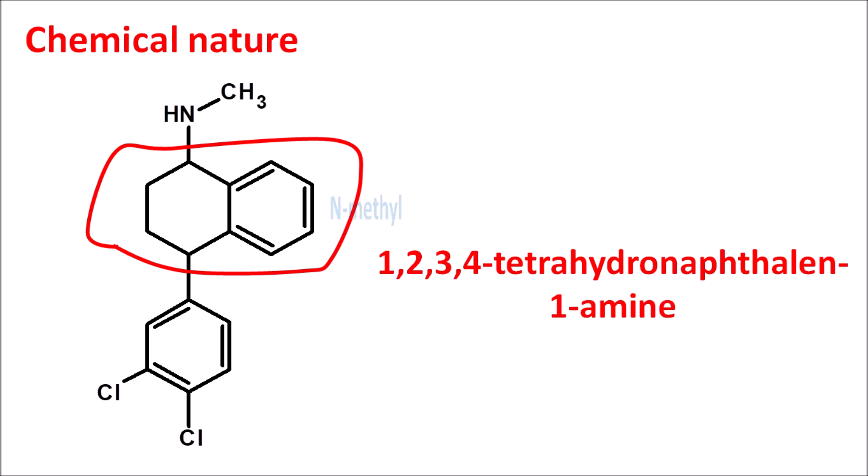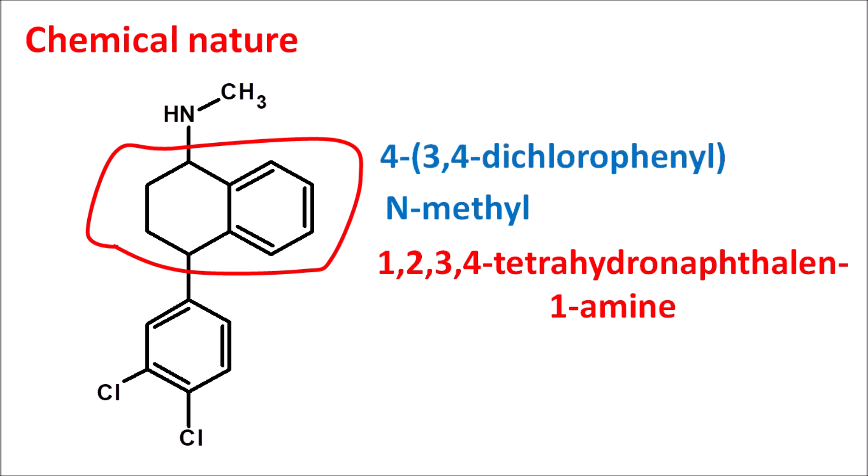On the nitrogen, a methyl group is present, so we write N-methyl. At the fourth position, it has a phenyl ring attached with two chlorine groups at the third and fourth positions, so we write 4-(3,4-dichlorophenyl). That is the complete name of sertraline.